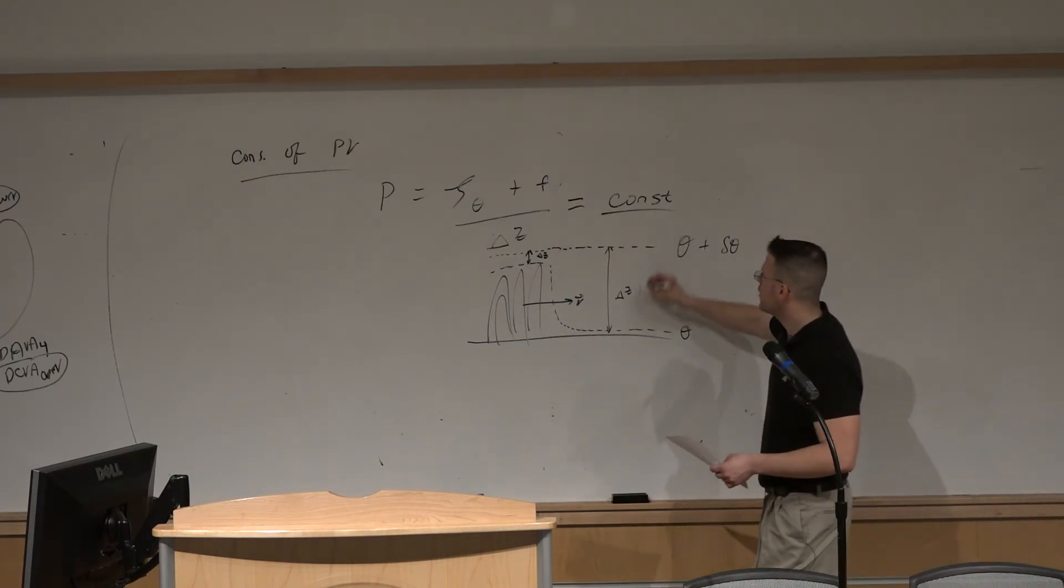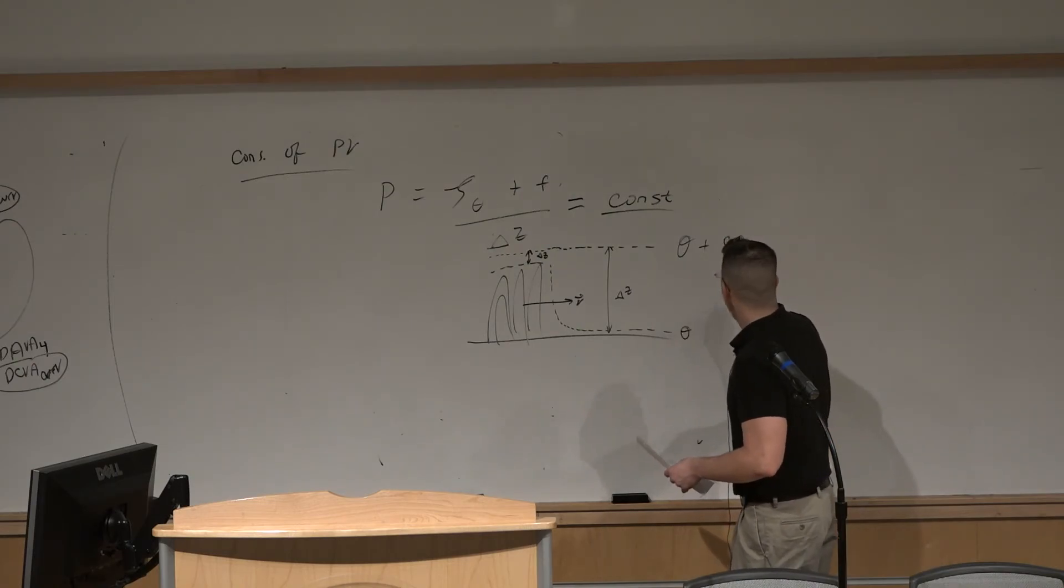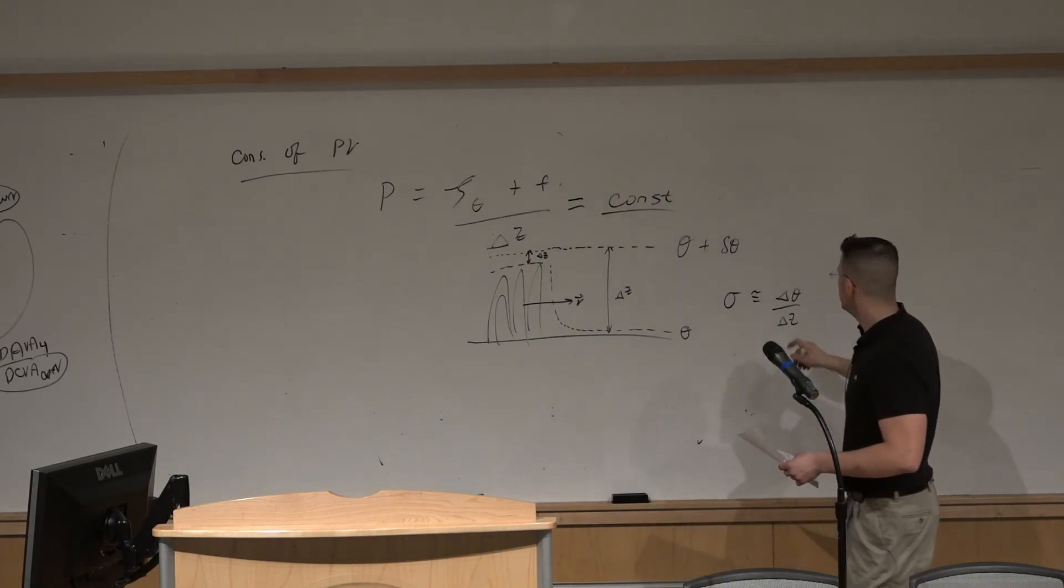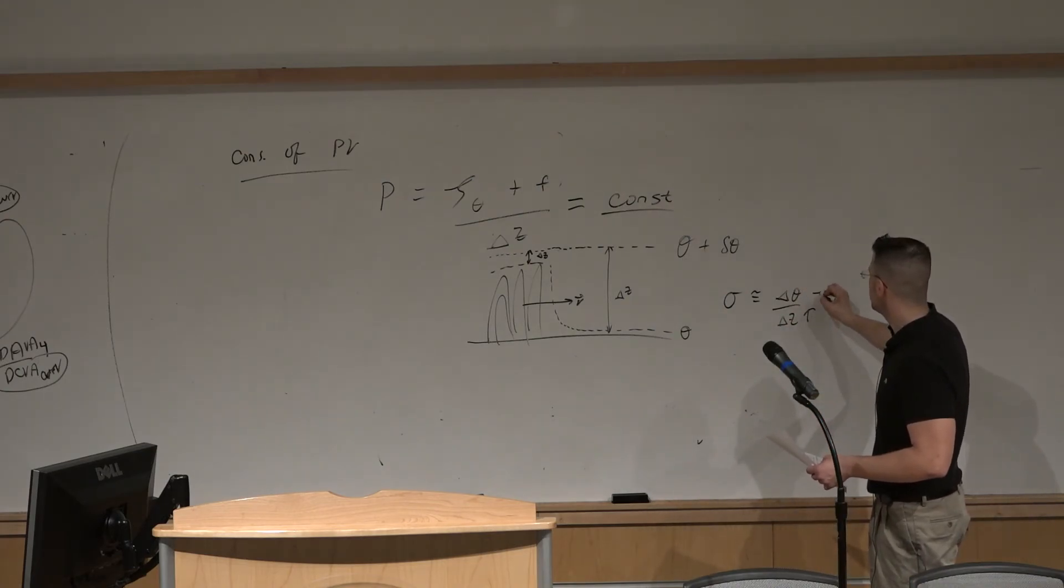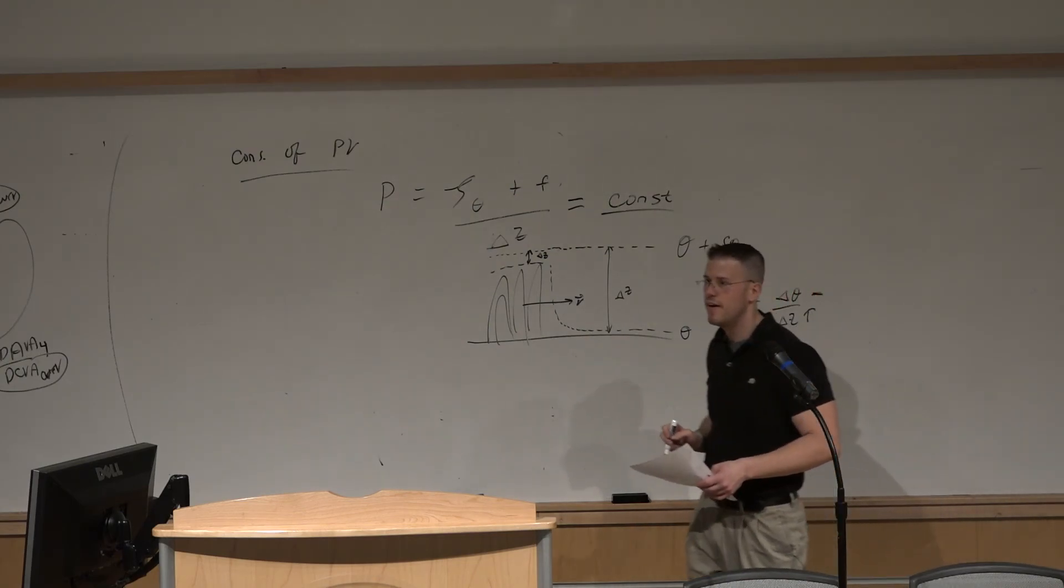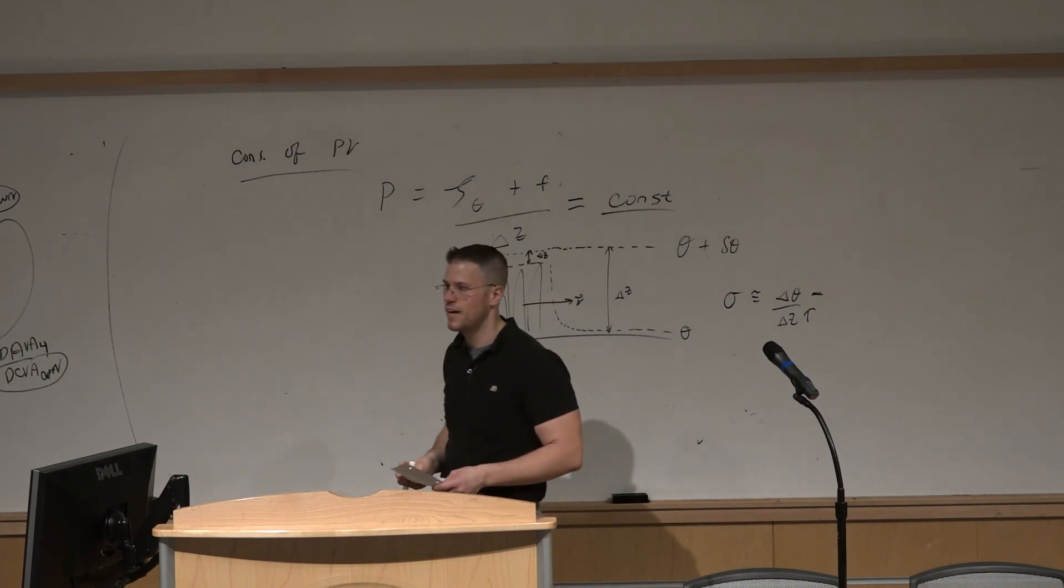At the same time within our column of air, sigma which is equivalent to delta theta over delta z, delta z is going to increase, delta theta is going to stay the same, and the static stability decreases within that column of air as we experience lee troughing occur simultaneously.